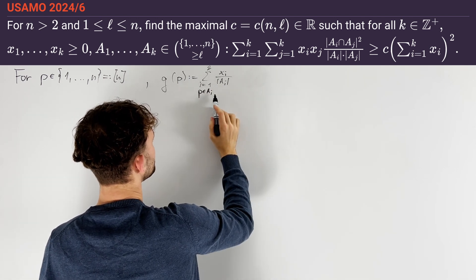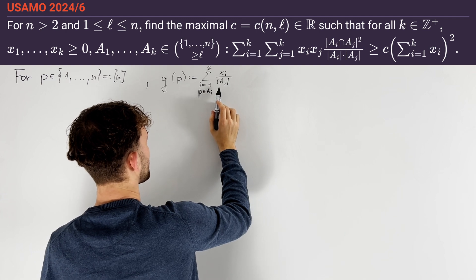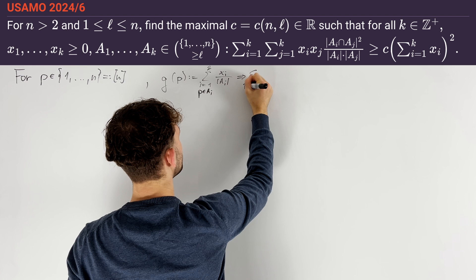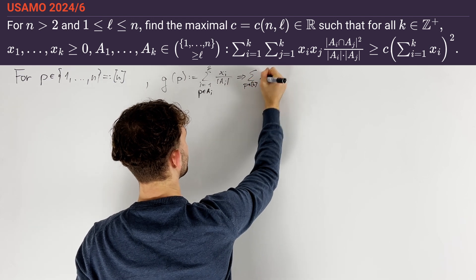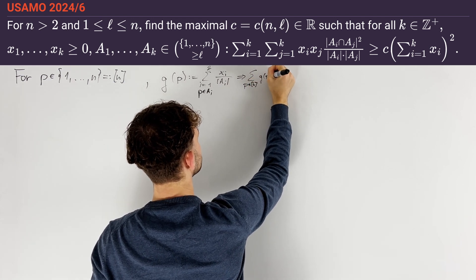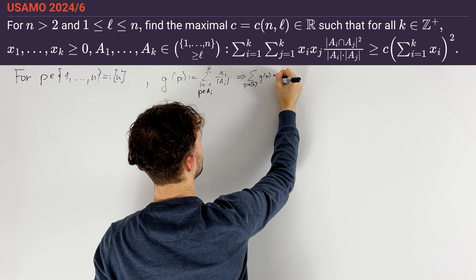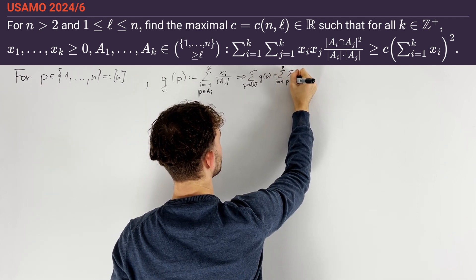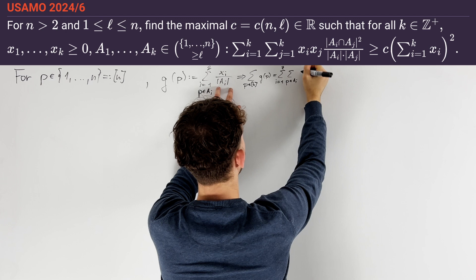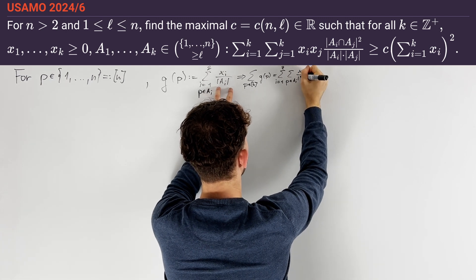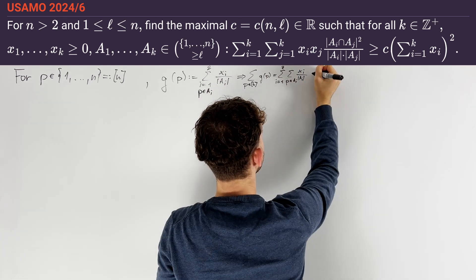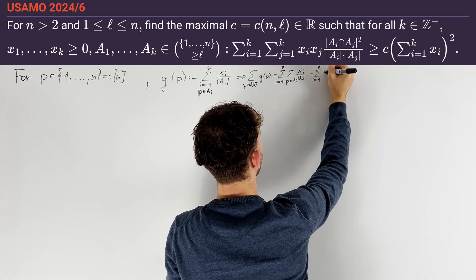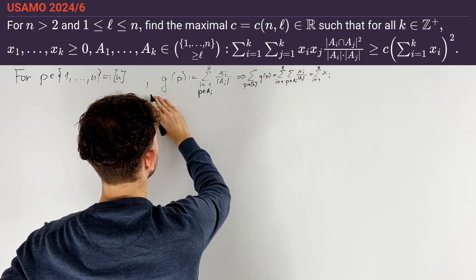So if we think of xᵢ as the weight of the set Aᵢ, then we are evenly distributing the weight of any set Aᵢ onto its members. Therefore we can evaluate the sum of all p of g(p); more rigorously this is equal to the sum of i from 1 to k of the sum of p in Aᵢ of xᵢ divided by |Aᵢ|, which equals the sum of i from 1 to k of xᵢ.